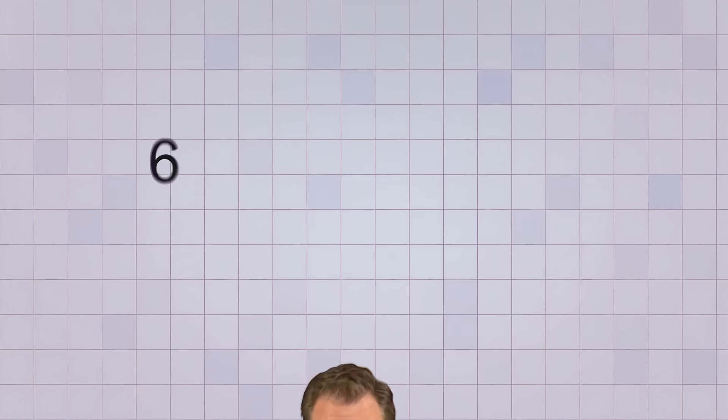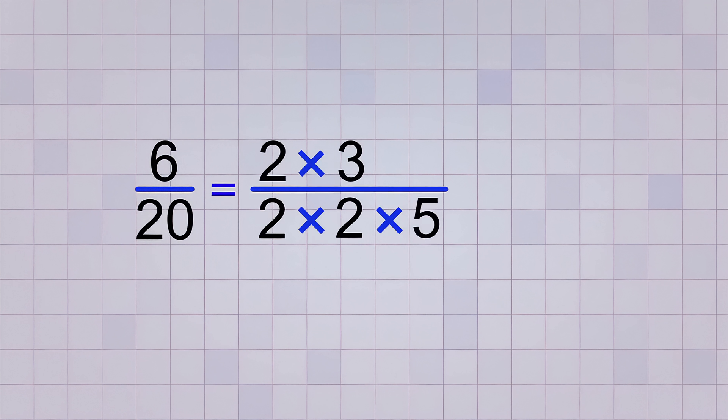Now that we know the basics, let's learn the procedure for simplifying fractions. First, replace the top and bottom numbers of the fraction with their prime factors.